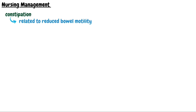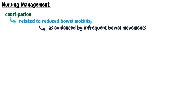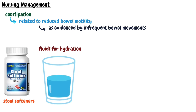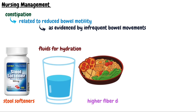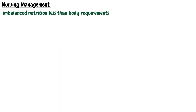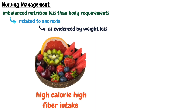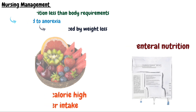The first nursing diagnosis is constipation related to reduced bowel motility, as evidenced by infrequent bowel movements. Nursing interventions include administering stool softeners, fluids for proper hydration, higher fiber diet intake, administering laxatives as prescribed, or giving enemas. The second nursing diagnosis is imbalanced nutrition, less than body requirements, related to anorexia as evidenced by weight loss.